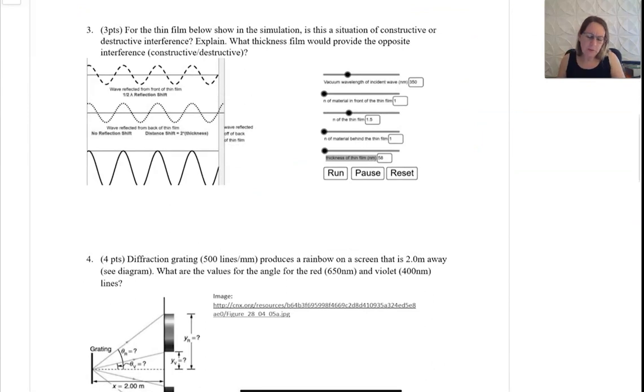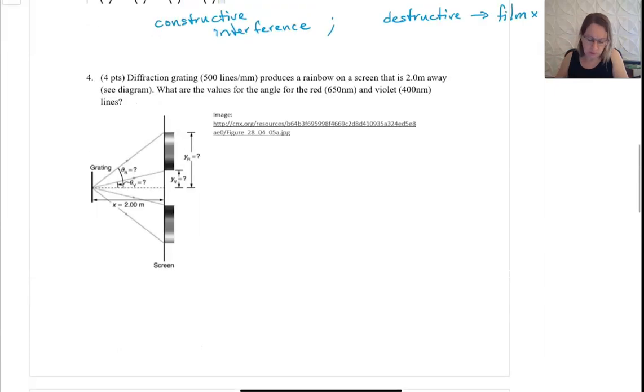For this thin film, these two waves reflecting off the front surface and the back surface are adding together. So this is constructive interference. And what we found from working with the simulation is that if we want destructive, then we take the film times two as a way to get destructive interference. So whatever this value is, we double it, or it could be other multiples as well.